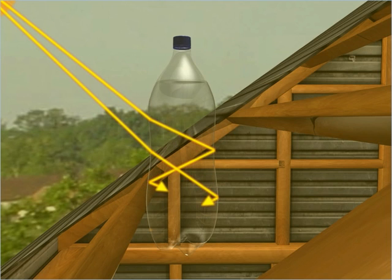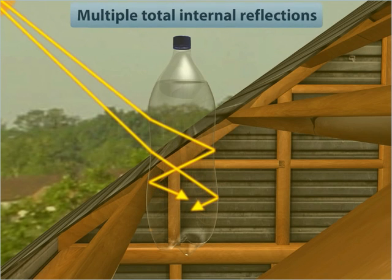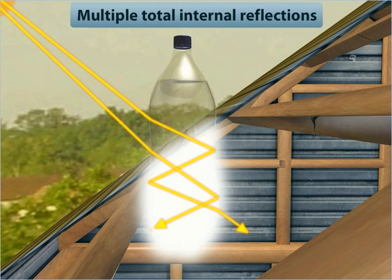So, inside the bottle, sun rays undergo multiple total internal reflections before finally refracting into air. This makes the solar bottle glow, serving as a 55 watt bulb.